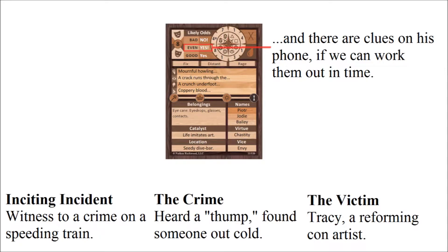On a long-distance, no-stops train ride, the main characters hear someone attacked, but arrive only in time to scare off the assailant and assist the injured Tracy, who appears to have had on his person some counterfeit collectible coins and text messages indicating that he was, perhaps, having second thoughts about cheating people. Depending on whether the main characters are amateurs or professionals, and whether anyone of authority is around to take charge, this case could proceed in a number of different ways.